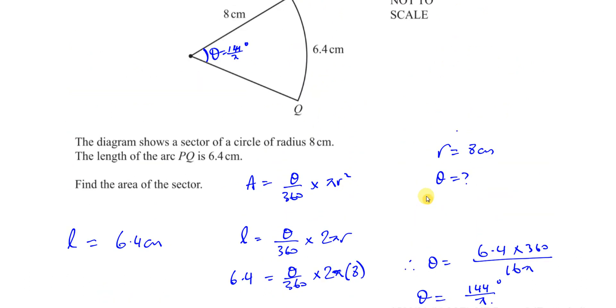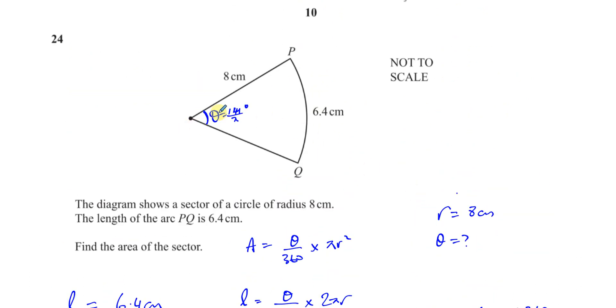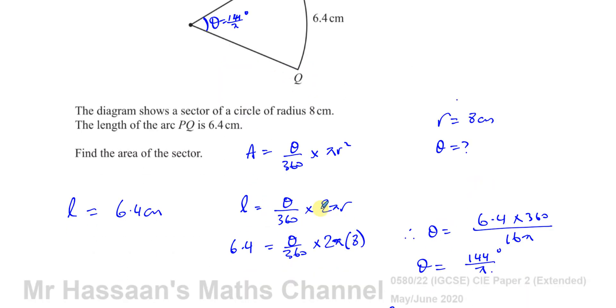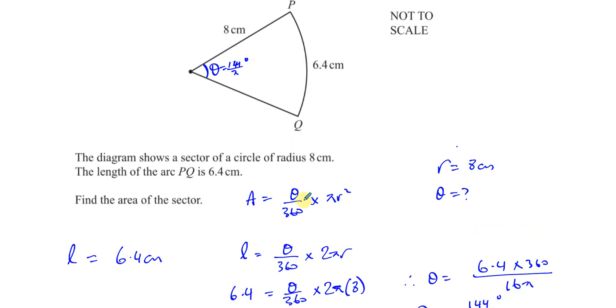So that's the area of this sector. So to find the area of this sector, you need the angle. You're not given the angle, but you're given the length of the arc. So you can use the length of the arc and the radius using this formula to find the angle. And once you know the angle, you can find the area by putting those into this formula.